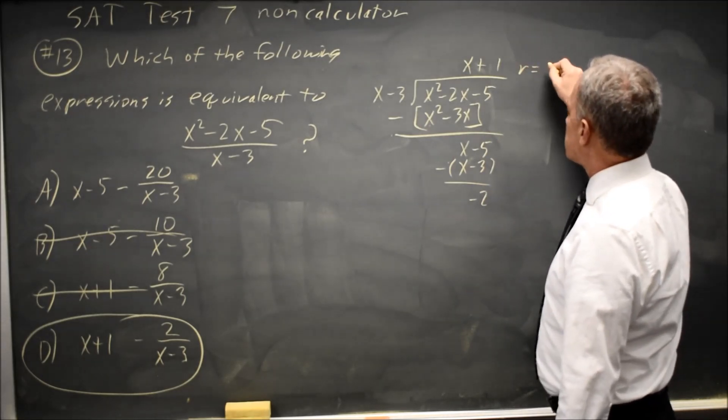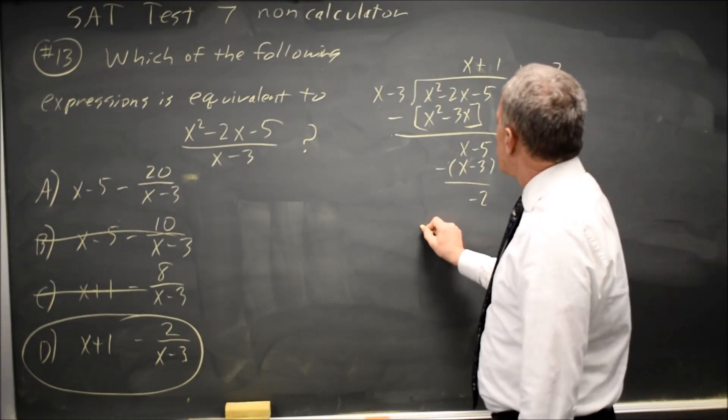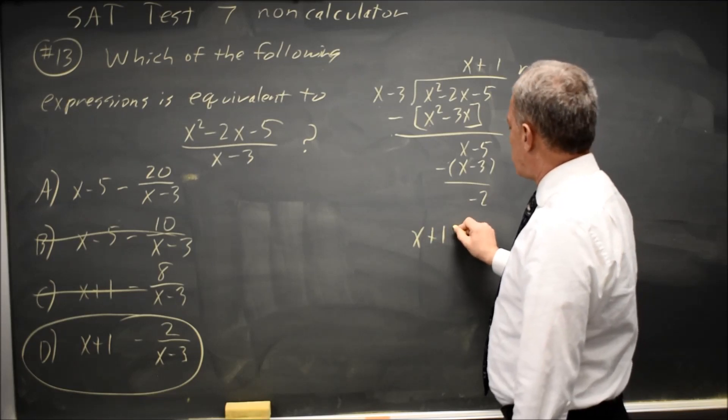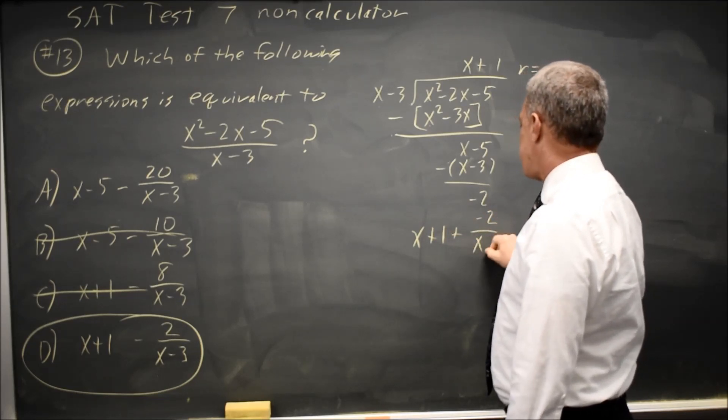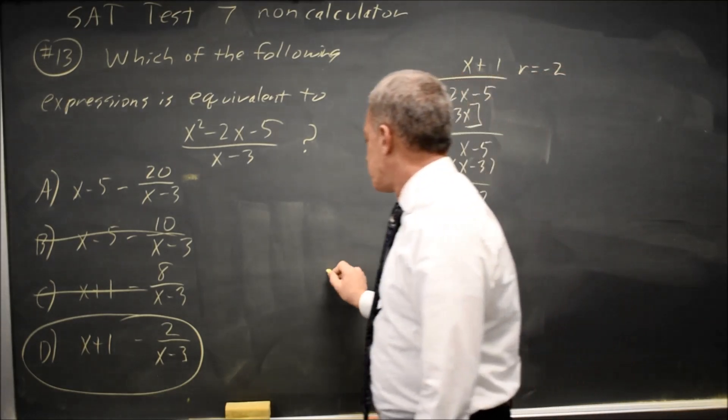So my remainder is negative 2. So my answer is x plus 1 plus negative 2 over x minus 3, which is equivalent to choice D.